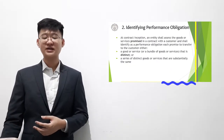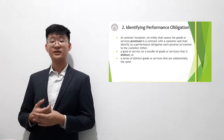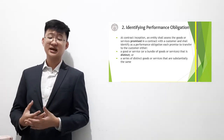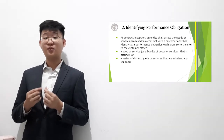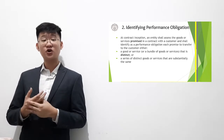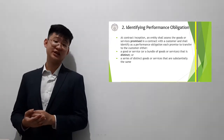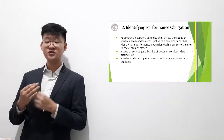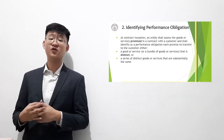Moving on to the second step of revenue recognition, which is identifying performance obligation. A performance obligation is essentially the goods or services that is promised in a contract. The key word here is 'distinct,' because each distinct good or service should be regarded as a separate performance obligation. However, a series of distinct goods or services that are substantially the same can be regarded as one performance obligation.